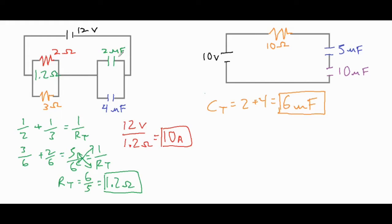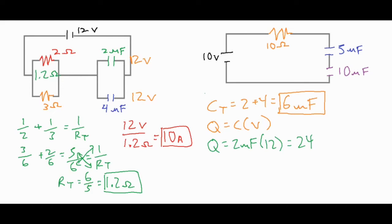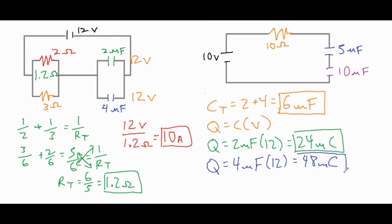Because the capacitors are wired up in parallel, they both have the same potential difference of 12 volts — 12 volts for each branch. To find the individual charges, we use Q = C × V. For the green two-microfarad capacitor: two microfarads times 12 volts equals 24 microcoulombs. For the four-microfarad capacitor: four times 12 volts equals 48 microcoulombs. Adding those together, the total charge is 72 microcoulombs.